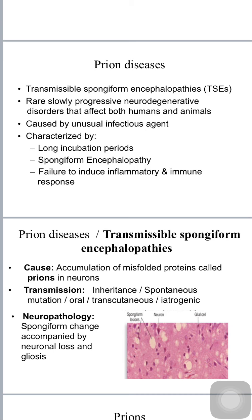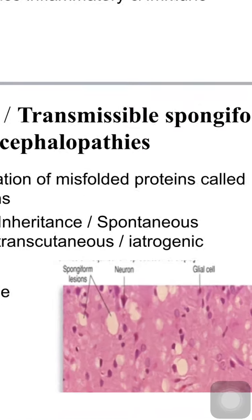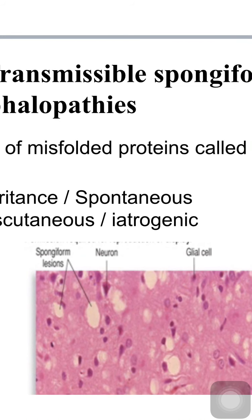Looking into neuropathology, there is spongiform change accompanied by neuronal loss and gliosis. The healthy brain tissue degenerates and is replaced by fluid-filled cavities called cysts, which give the appearance of a sponge to the brain. These are the spongiform lesions visible in histological pictures.